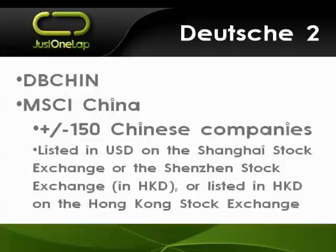The second of the Data Bank ones is DBCHIN, which is the MSCI China index. It's about 150 Chinese companies. They might be trading on the Shanghai Exchange, the Shenzhen Stock Exchange, or even the Hong Kong Stock Exchange. Take Tencent as an example — that is out and out a Chinese company, does all its business in China, makes all its profit in China, is aimed at Chinese people, but trades on the Hong Kong Exchange. So these are 150-odd Chinese companies but they could be trading on any one of those three exchanges. If you want the details on what the underlying stocks are, you could Google the MSCI China or I'll give you a link to the Data Bank page where they provide a lot more information.